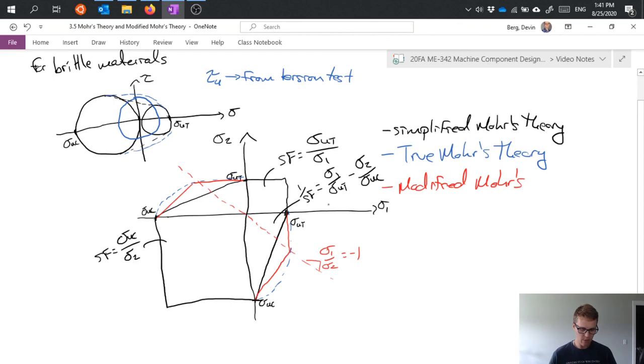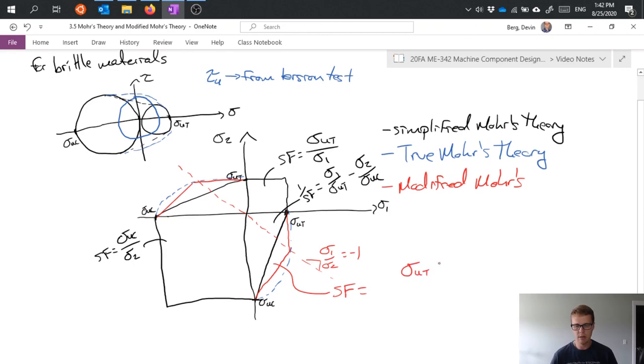now if I want to get the area under the red curve on either of these quadrants which I'm going to go get a different color pen, then my equation ends up looking like sigma_ut sigma_uc